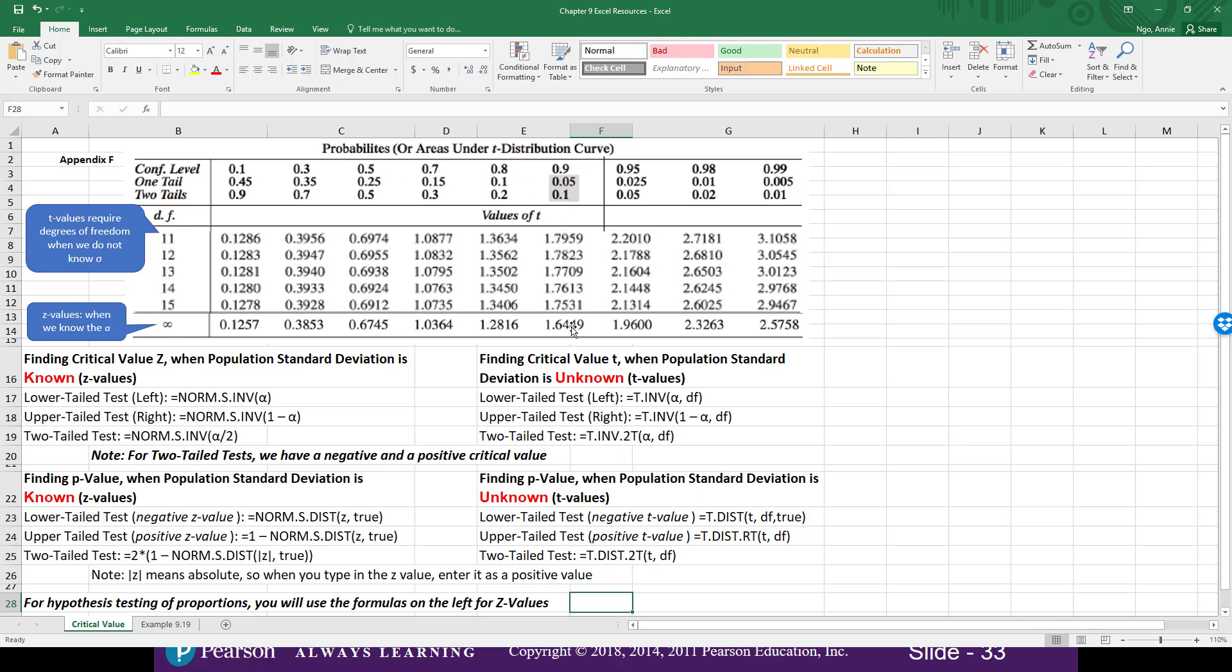Recall that when it's a lower tail test, it's going to be a negative critical value. You can also use Excel to find the same thing. The lower tail test here on the left is equals NORM.S.INV parentheses and our alpha was 0.05.